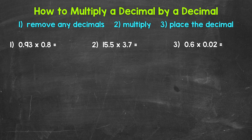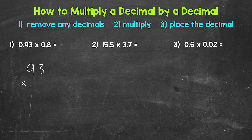Let's jump into number one where we have 93 hundredths times 8 tenths. The first thing we need to do whenever we have a multiplication problem involving decimals: we remove any decimals, then we multiply, and lastly we place the decimal in our answer. So for number one, let's remove the decimals and set up the problem. So we have 93 times 8.